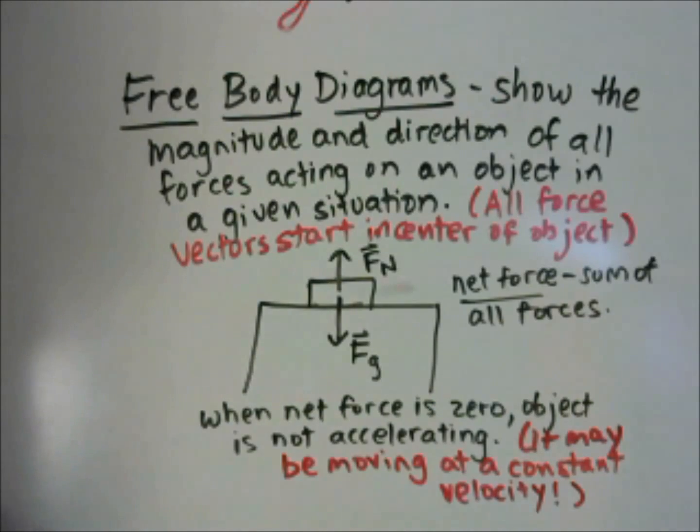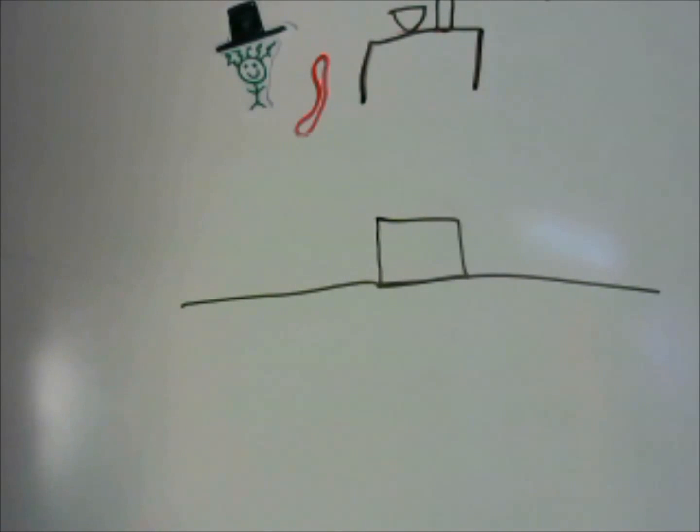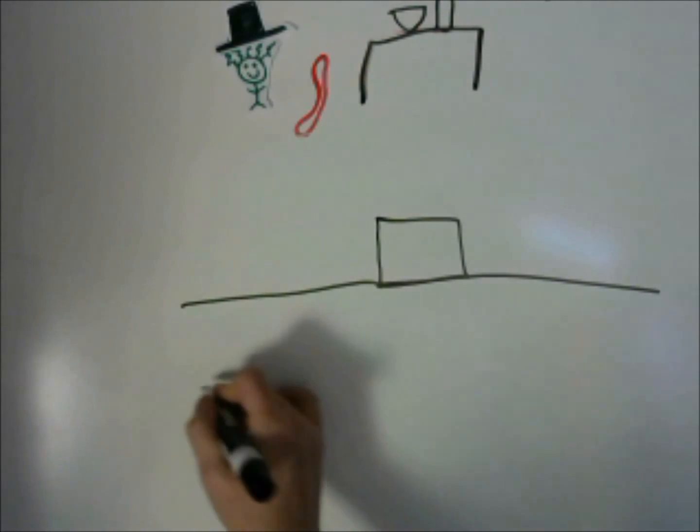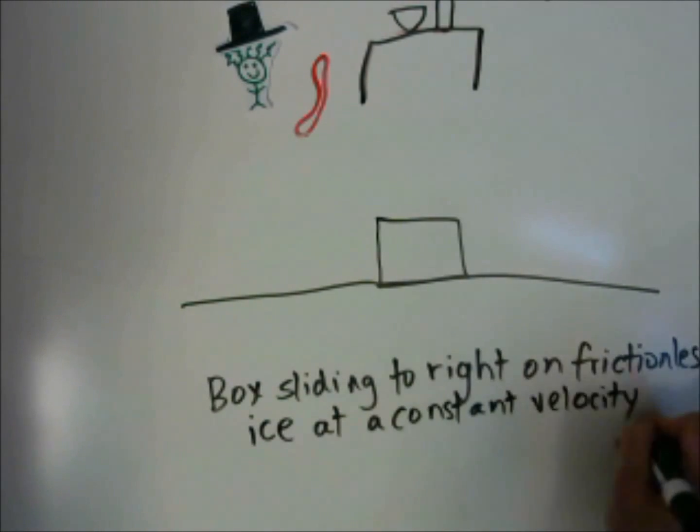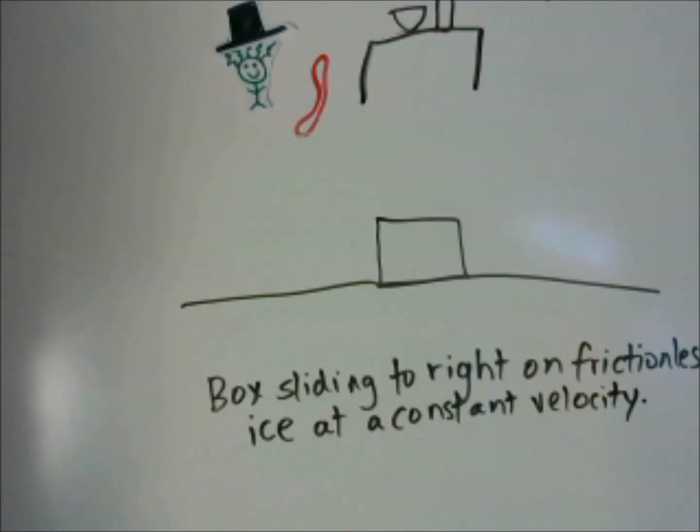Let's do an example of that. Let's say we have a box sliding on frictionless ice. We have a box sliding to the right on frictionless ice at a constant velocity. What are the forces that are acting on it? Well, we know we have gravity. We also know the box is not going through the ice, so we have a normal force from the ice onto the box.